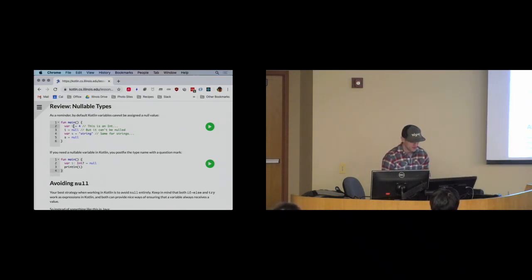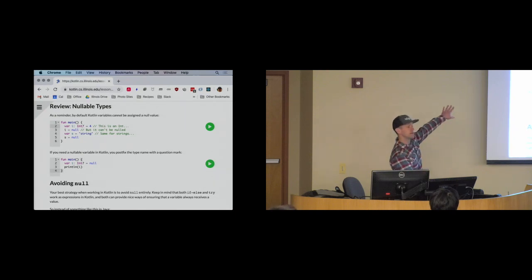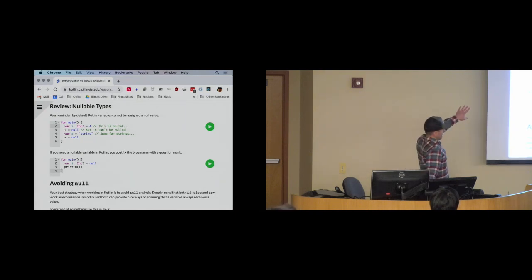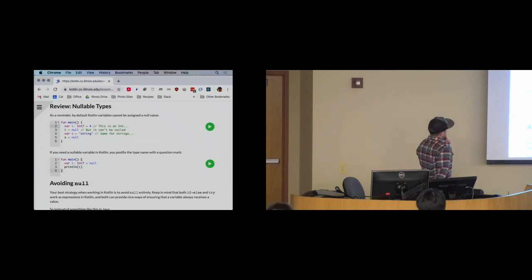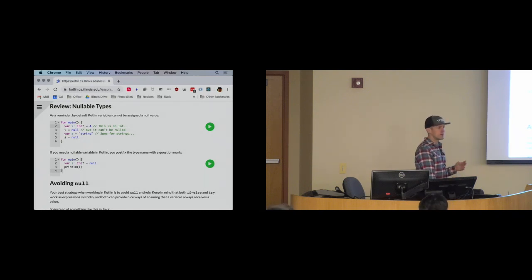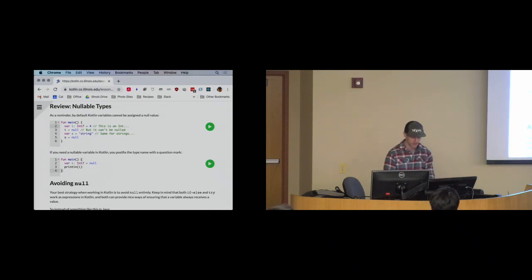If I wanted this to be a nullable int, I have to explicitly specify a type. Kotlin will essentially never infer the type for a nullable variable — you always have to specify it explicitly.